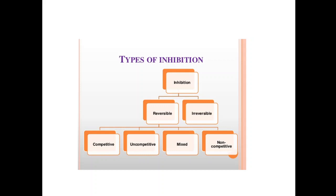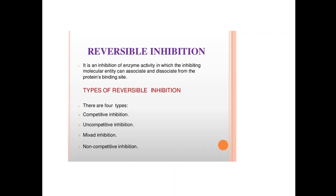Types of inhibition: inhibitions are of two types — reversible and irreversible. Reversible is further divided into three types: competitive, uncompetitive, and mixed, while irreversible is divided into non-competitive types. Reversible inhibition is an inhibition of enzyme activity in which the inhibiting molecule can associate and dissociate from the protein binding site.